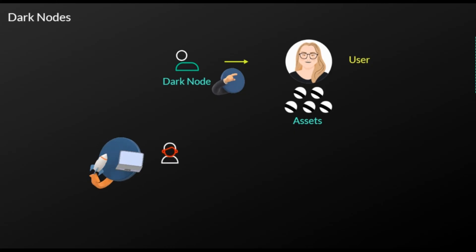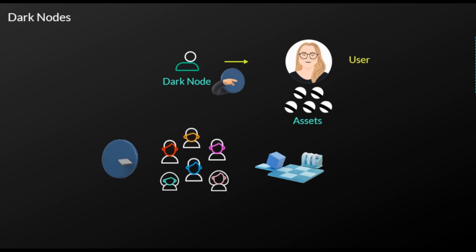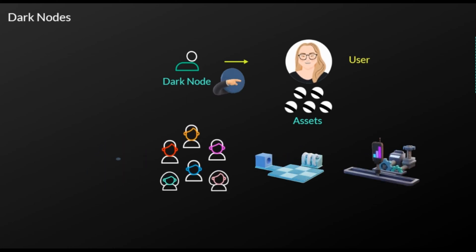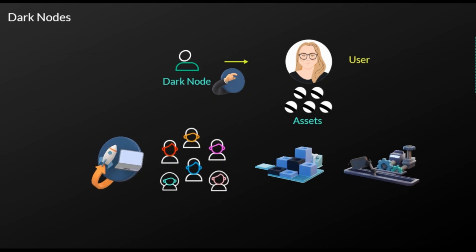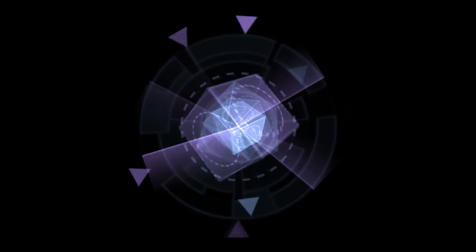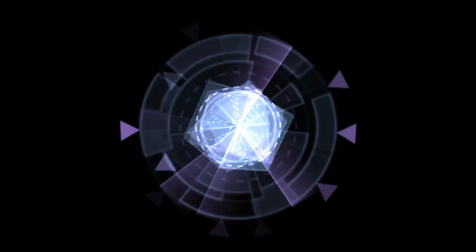Dark Nodes are decentralized and permissionless. They cannot block a user from minting or redeeming a token. They are called Dark Nodes because the people running them can't actually see how much cryptocurrency is being converted and validated, or where it's being sent through their machines. They use an algorithm called Shamir's Secret Sharing Algorithm, a cryptographic principle that divides secret data into parts held by different participants.